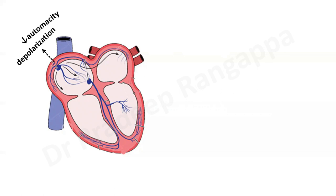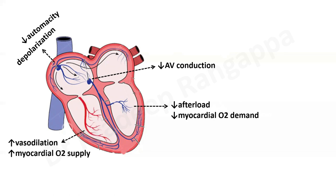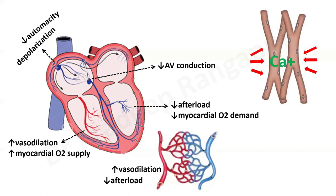CCBs cause depolarization and reduce the automaticity of the SA node. Calcium is needed for AV conduction, and within the myocardium it reduces afterload and myocardial oxygen demand. Calcium also causes coronary vasodilation and increases myocardial oxygen supply. Overall, calcium within the myocardium has a multimodal effect favoring cardiac function by improving conduction, optimizing coronary perfusion, and increasing vasodilation and oxygen supply. At the peripheral level, it increases vasodilation and reduces afterload. Intracellular calcium also determines myocardial contractility by synchronizing the action of actin and myosin.